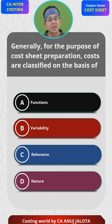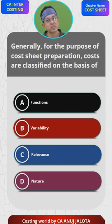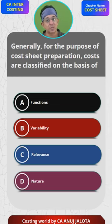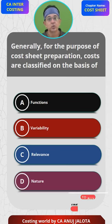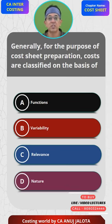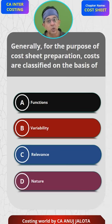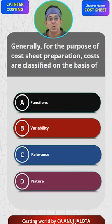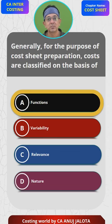You have a marketing department, so its expenses come as part of S&D. You have an office, so its expenses come as part of general administration. Therefore, in a cost sheet, we always accumulate expenses based upon functions. So the answer here should be A — Functions. That's the correct answer.